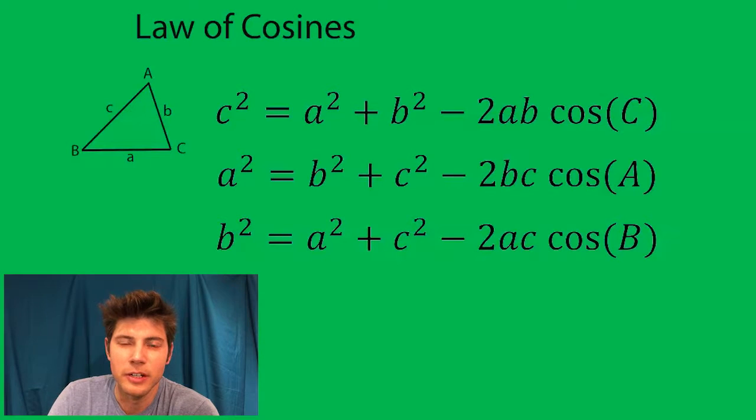The little letters are the sides, and then capital A, capital B, capital C are the angles—those are the larger letters. Notice how capital C is always opposite lowercase c, capital B is always opposite lowercase b, and capital A is always opposite lowercase a.